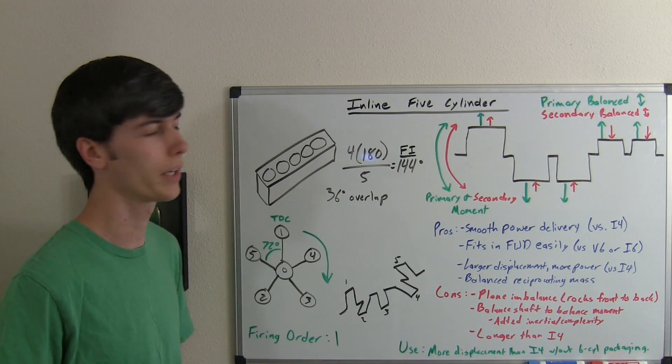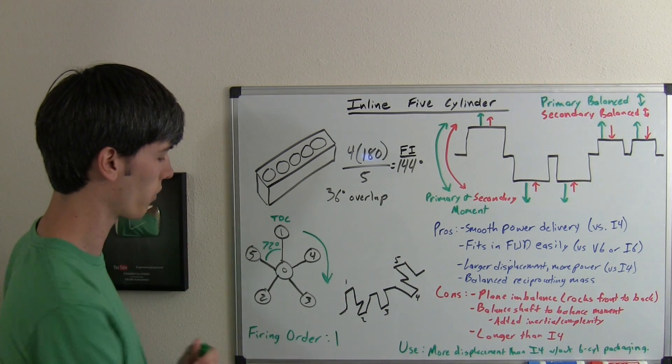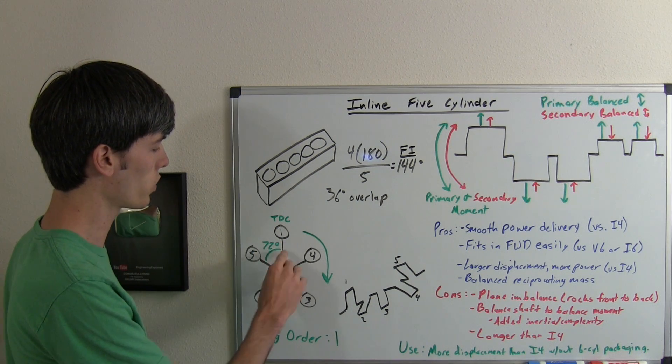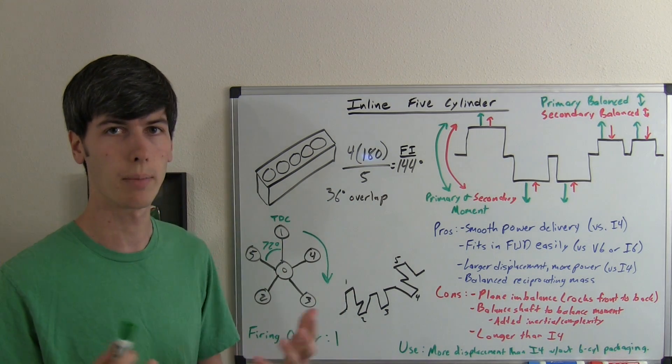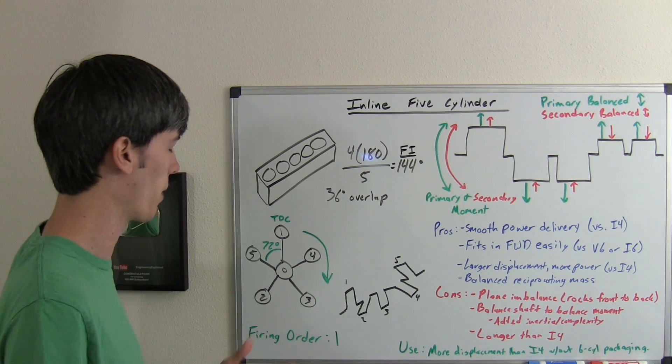As I mentioned, the firing interval is going to be every 144 degrees. There's 72 degrees split between each of them. That's just 144 divided by two, so that you can have a nice, even distribution of the cylinders and the power strokes.